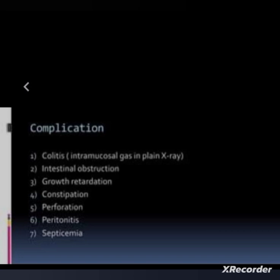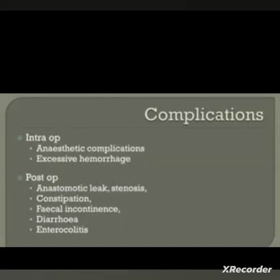Complications of Hirschsprung's disease include colitis, intestinal obstruction, growth retardation, perforation, peritonitis, and septicemia. Perioperative complications include anesthetic complications and intraoperative hemorrhage. Postoperative complications include anastomotic leak or stenosis, constipation or fecal incontinence, diarrhea, and enterocolitis.